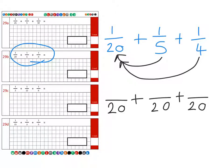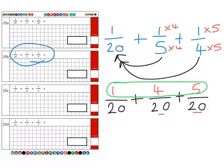So the 20 remains the same, so we just place the one at the top like the original fraction. The 5 was multiplied by 4 to make the 20 here, so we do the same with the numerator. So 1 times 4 is 4. And the 4 was multiplied by 5 to make this denominator of 20, so we do the same with the numerator at the top to give us 5. Then we add together our numerators to give us a grand total of 10 over 20, or a half.